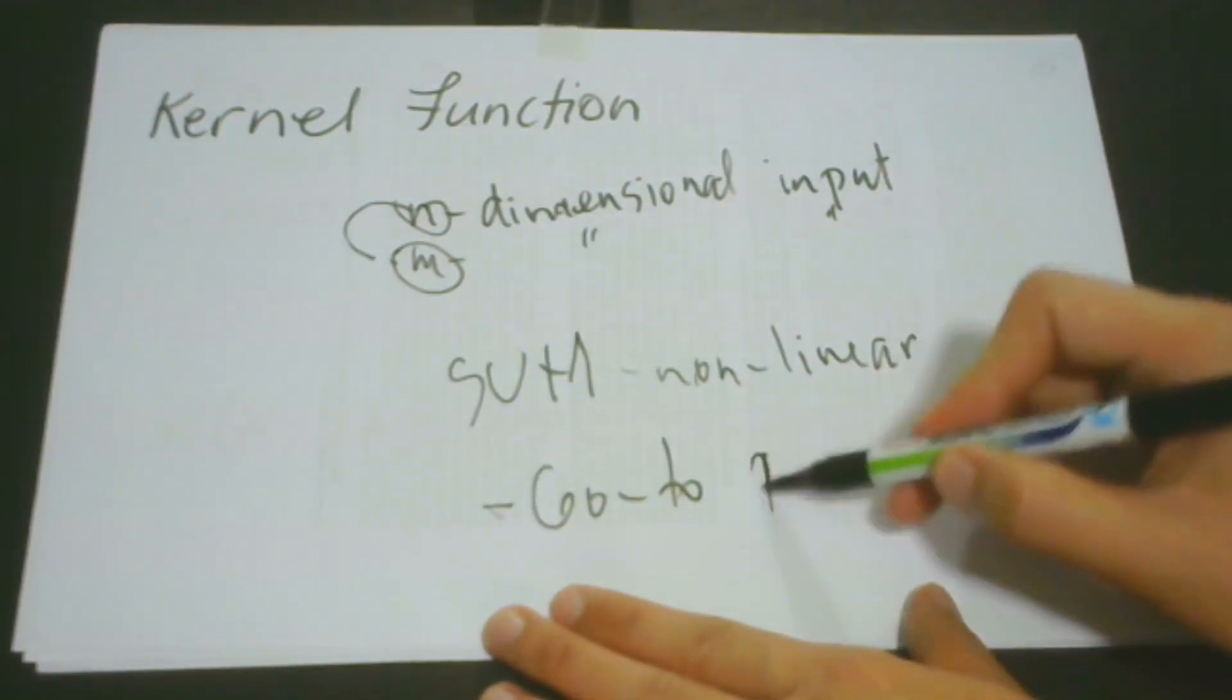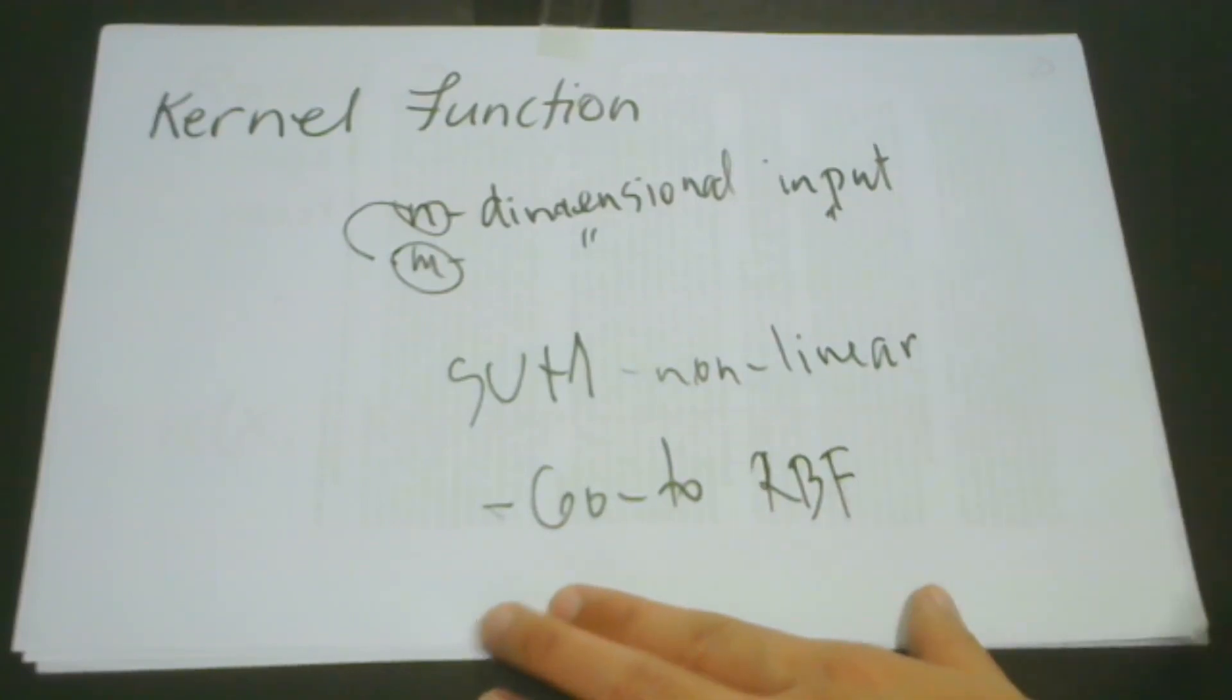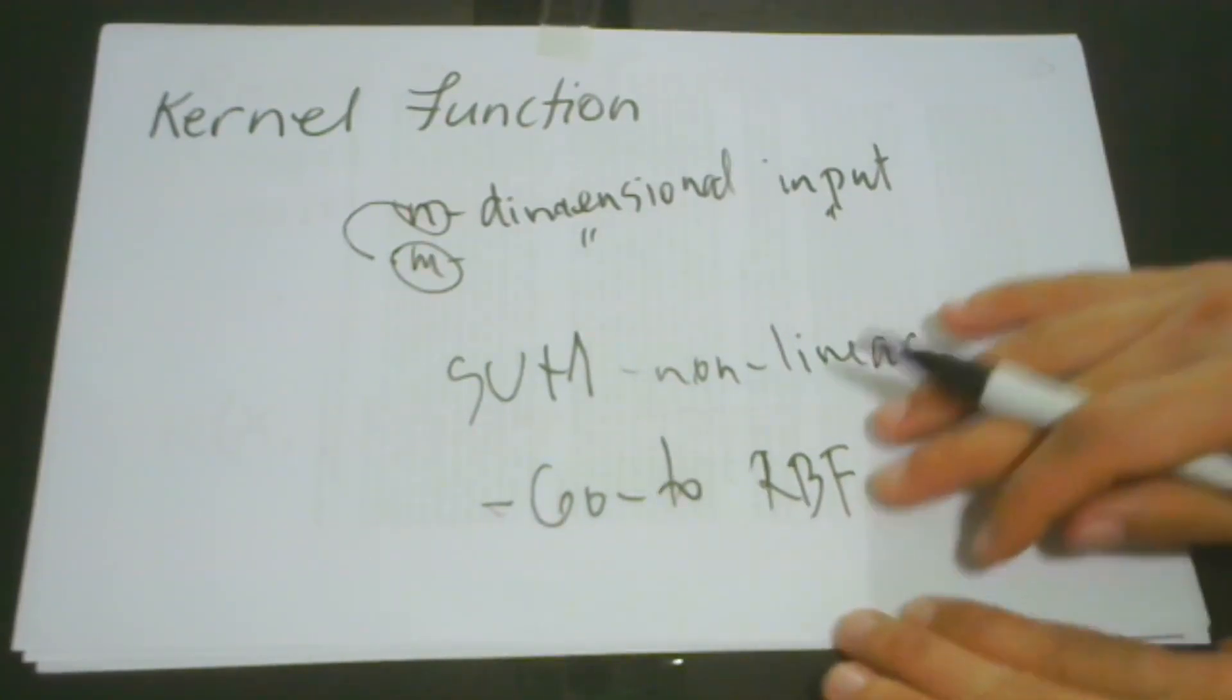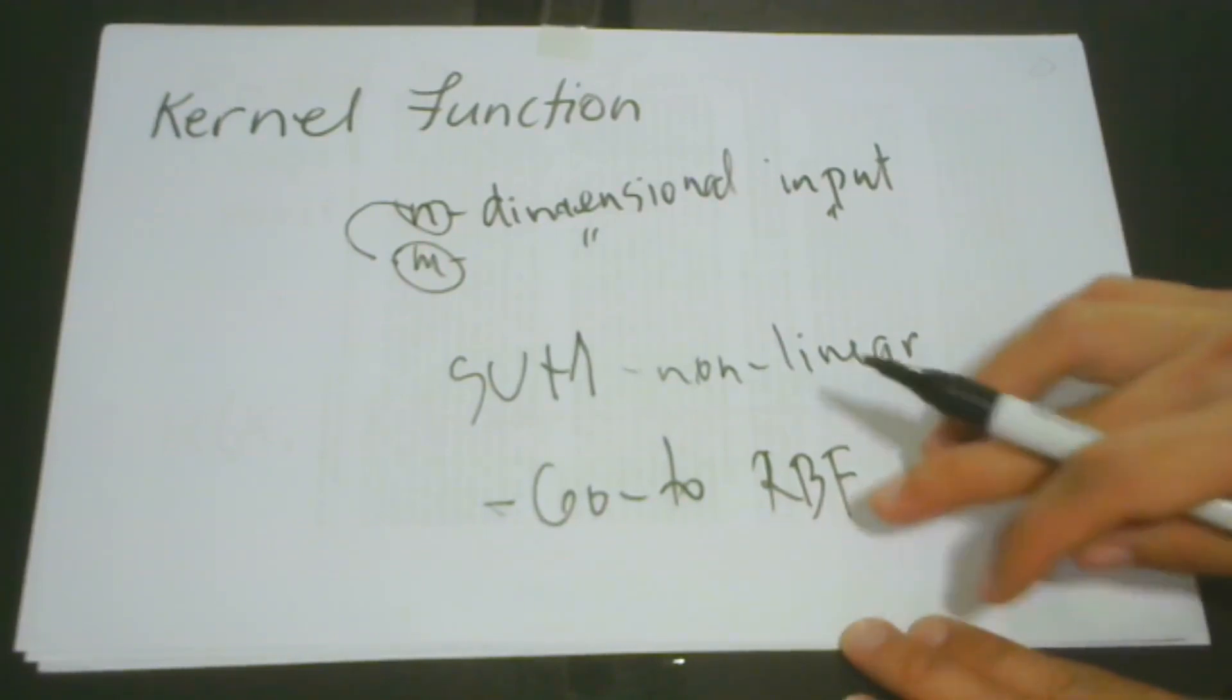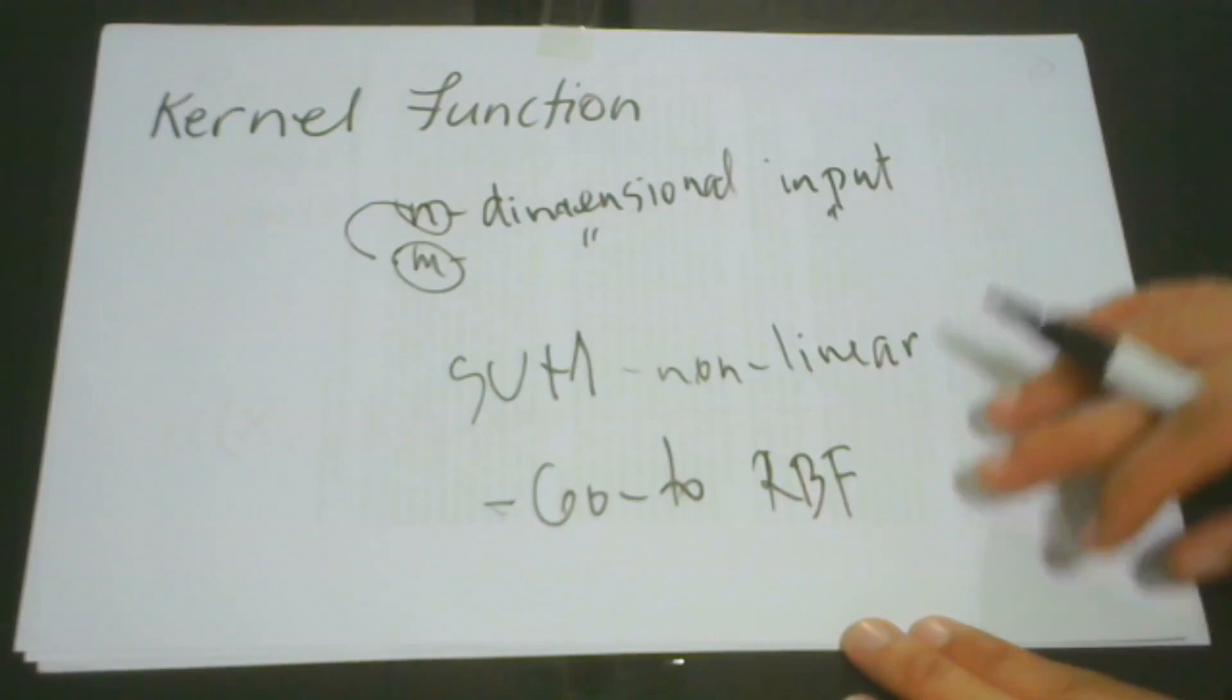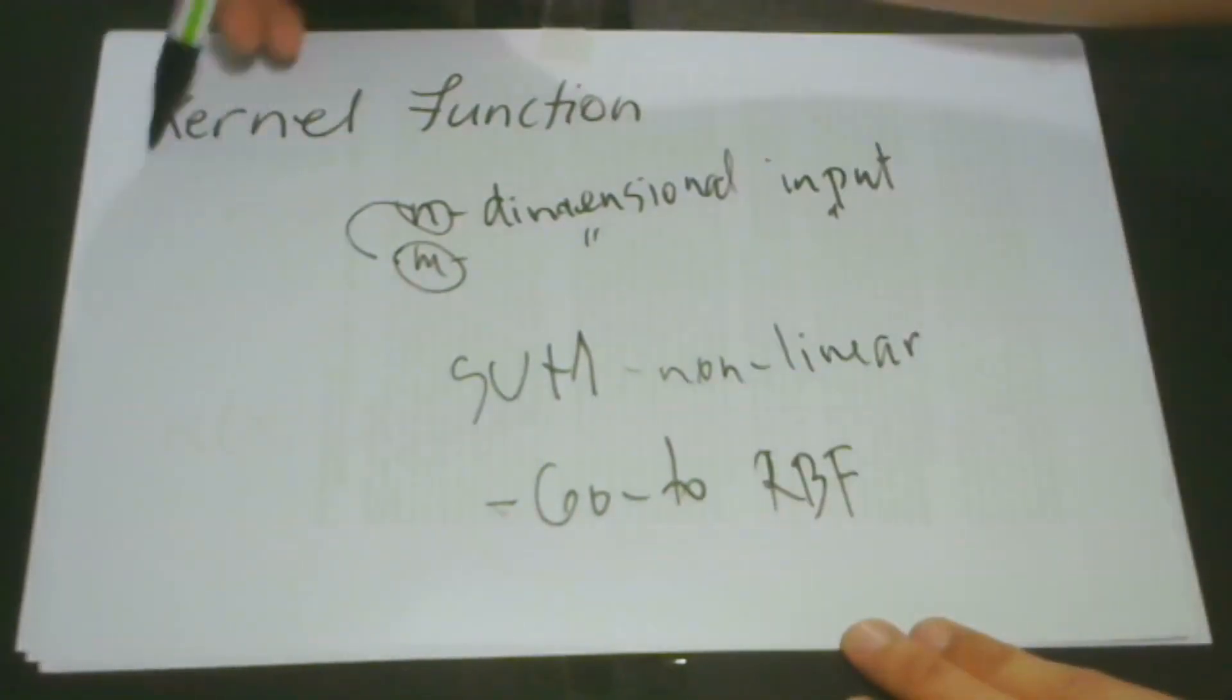And if your problem is that kind of confusion, then this time you don't have to worry because there is always a go-to kernel you can ask for help. And this is what we call an RBF or Radial Basis Function. So this kind of kernel function is your default function, your go-to kernel function.